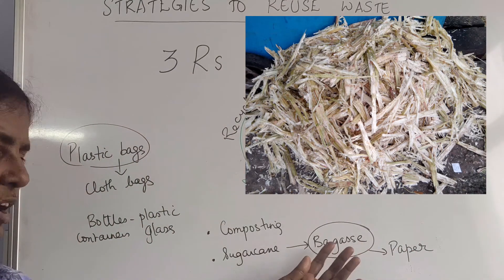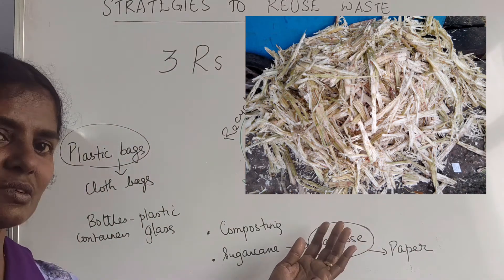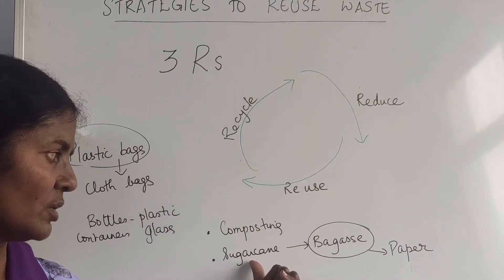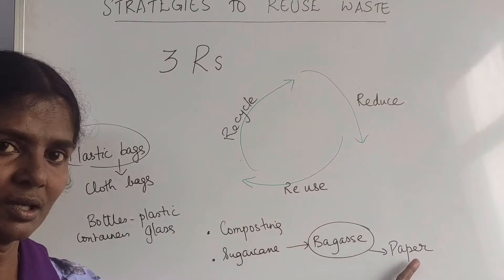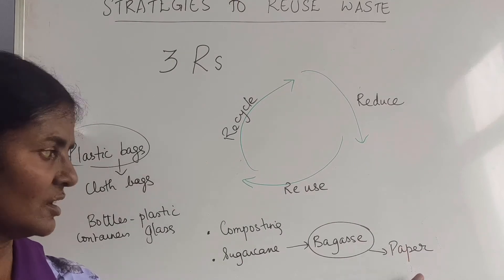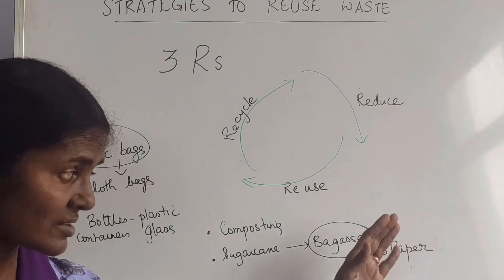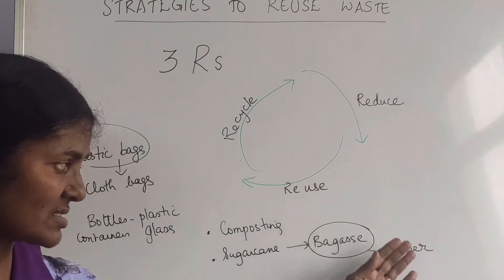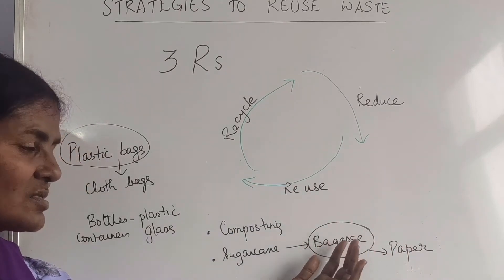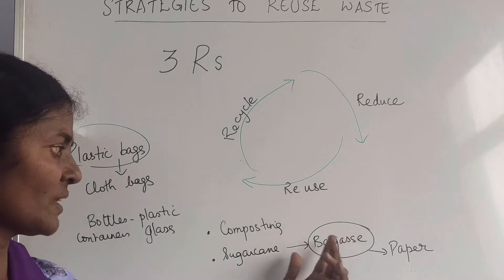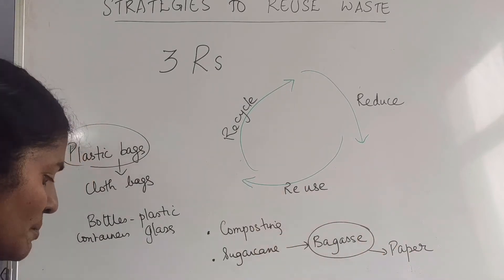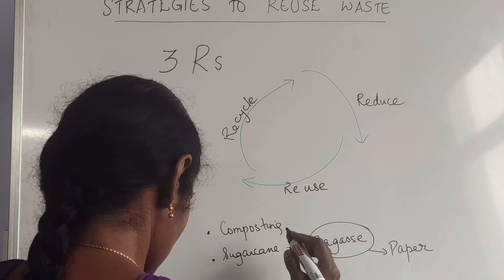Paper can be made out of this waste product of sugarcane. Usually paper is made out of trees. So now we are indirectly saving trees by recycling the waste. This is a waste product of sugarcane processing and it is used to make paper, so that is another example.